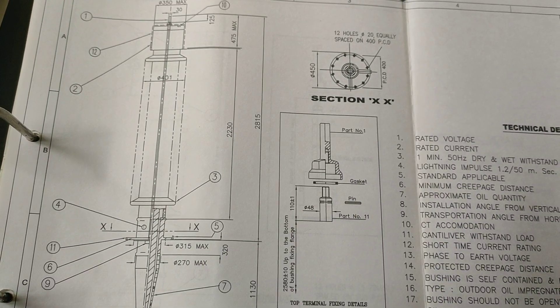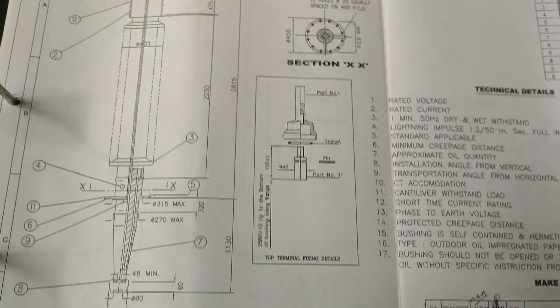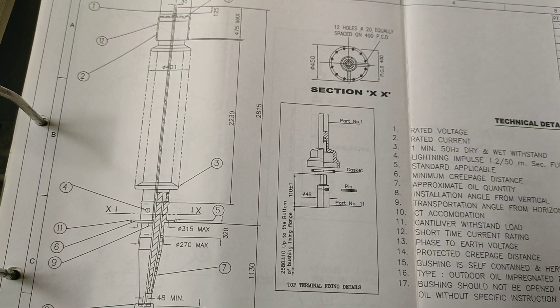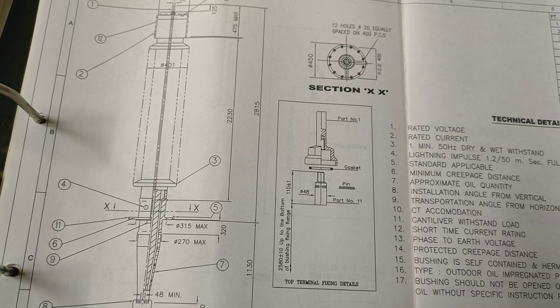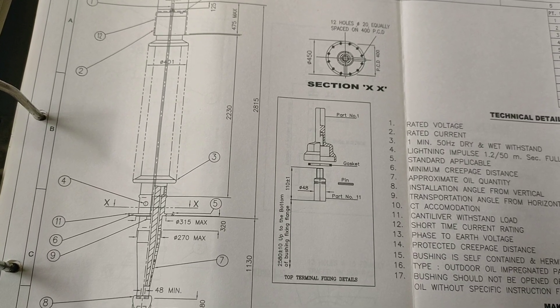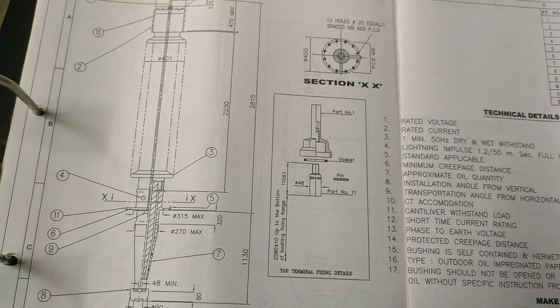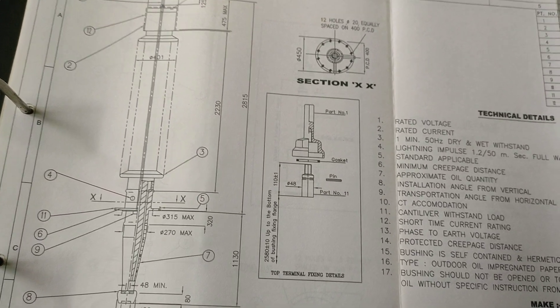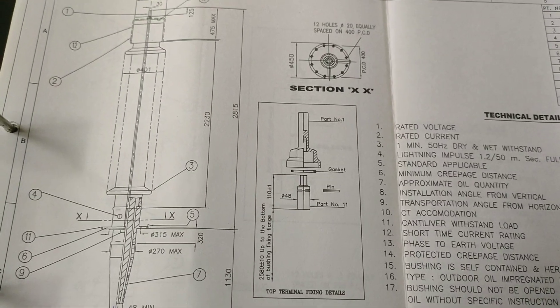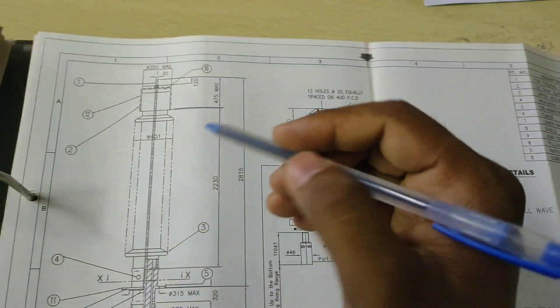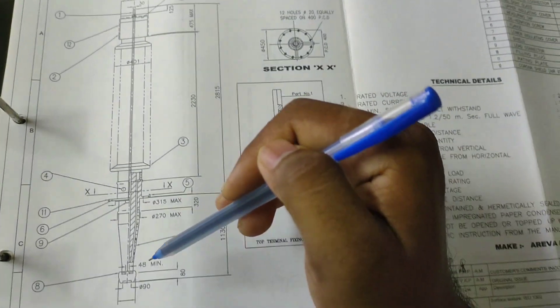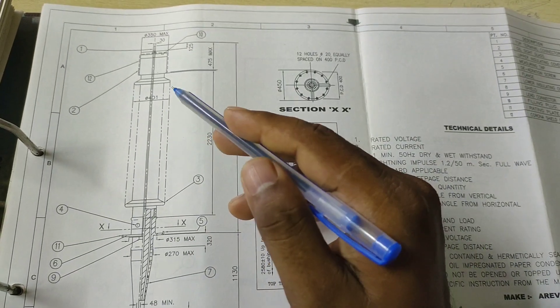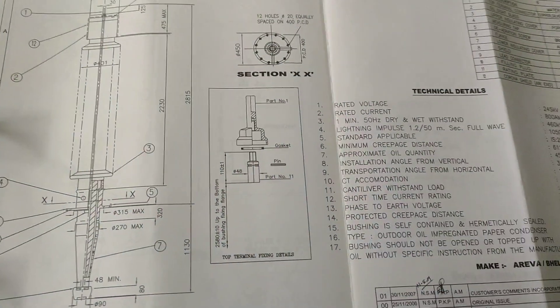Number nine is the lead connector. Number ten is the filling plug. Number eleven is the rating plate, and number twelve is the corona shield. This is the HV bushing. By help of this bushing we are connecting the HV side of the transformers.